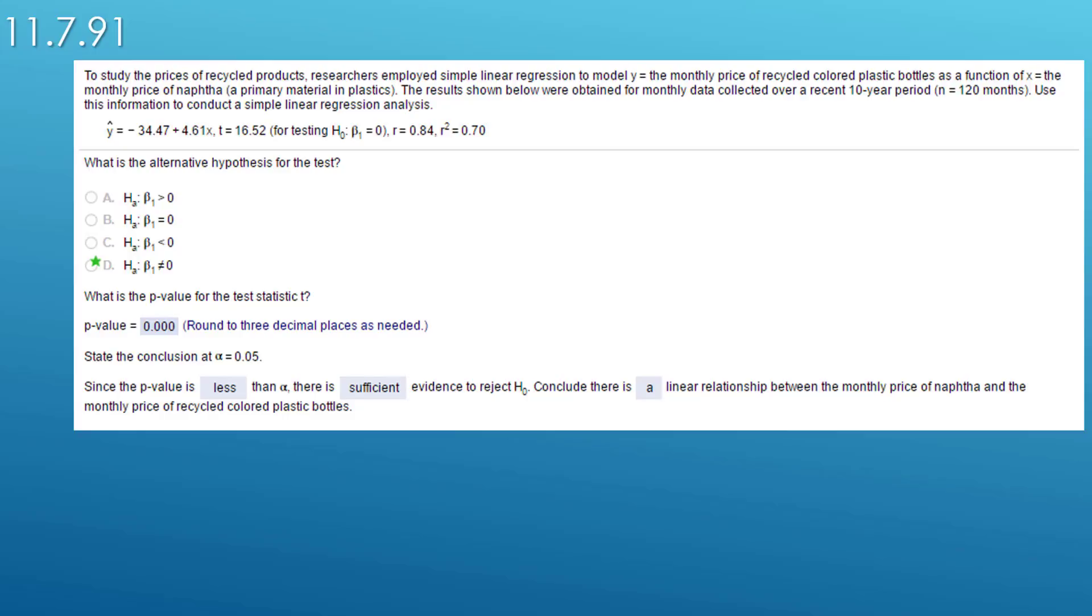The first thing they want to know is what is the alternative hypothesis for the test. Our information up here gives us that the null is that beta 1, the slope, is equal to zero. Well, that's true for almost every regression you will run into. The null is always there is no slope, there's no correlation, no relation between the two variables in the simple linear regression.